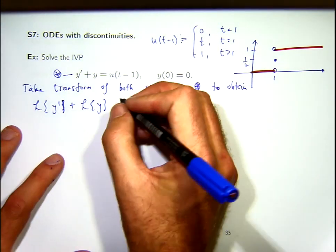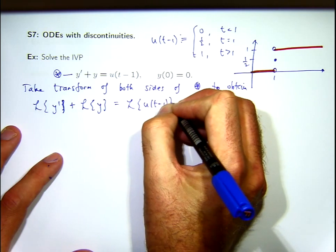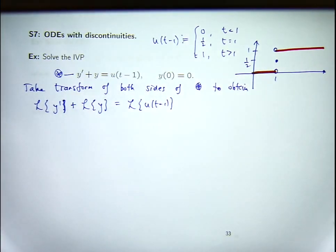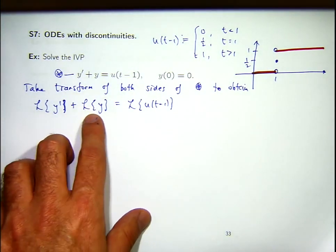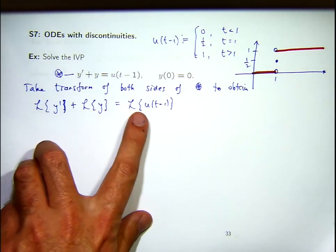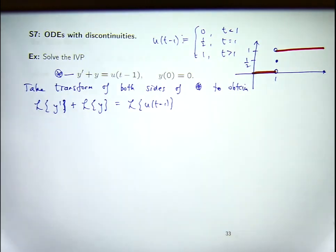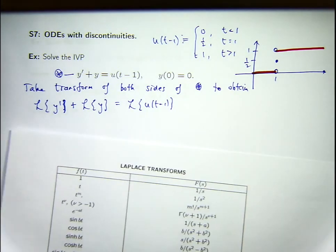So if I take the transform of the left-hand side, I can expand it and just write it as the following, because the transform is a linear operator. And the right-hand side, there's going to be this. So we don't know what this is. Let's calculate this. Let's calculate this. Now on the right-hand side, I'm going to use a table to calculate that transform.